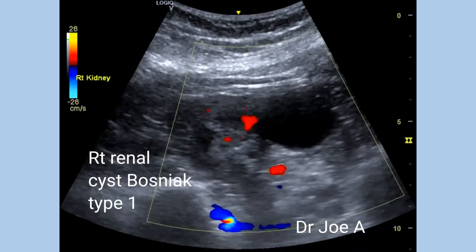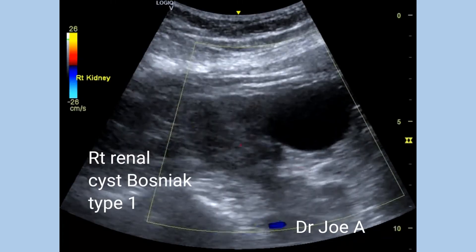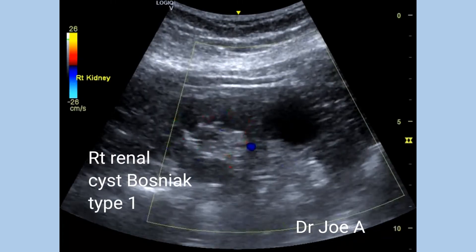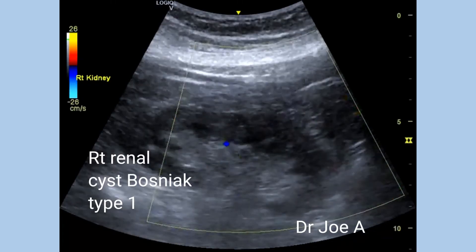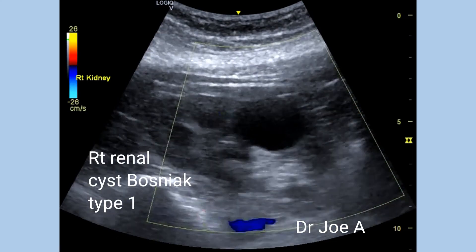The right kidney shows a Bosniak type 1 simple renal cortical cyst.